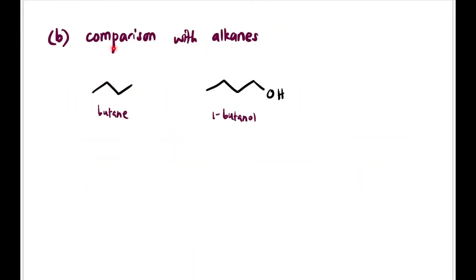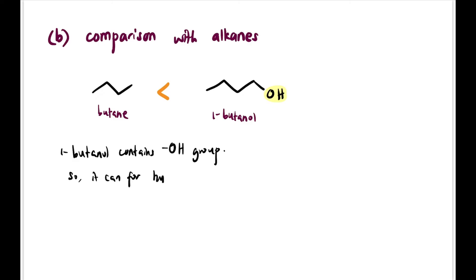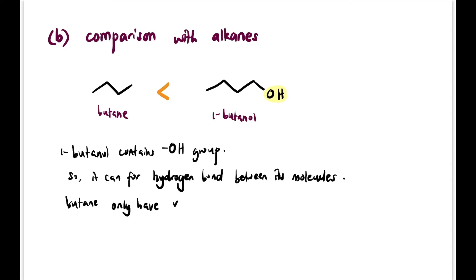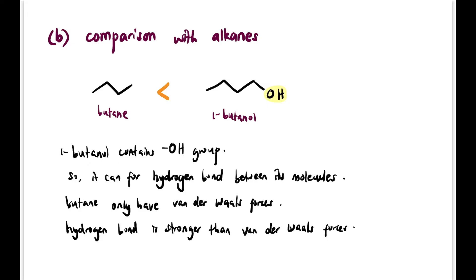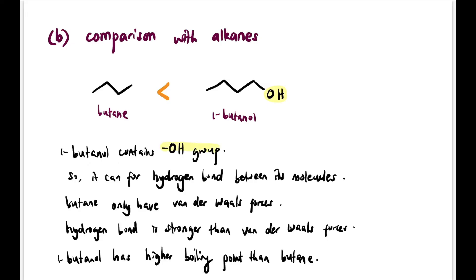Comparing alcohol with alkane — for example, butane vs. 1-butanol — 1-butanol has a higher boiling point because it has an OH group enabling hydrogen bonding between molecules. Butane only has van der Waals forces since it has no OH group. Hydrogen bonds are much stronger than van der Waals forces, which is why 1-butanol has a higher boiling point than butane. Fun fact: ethanol has a higher boiling point than hexane, despite only having two carbons.